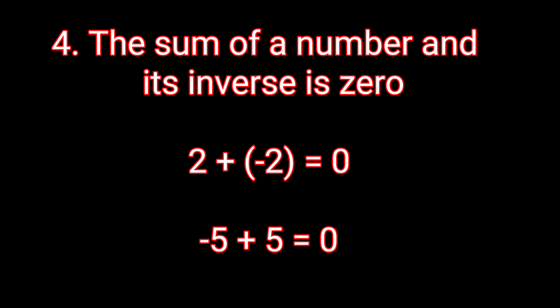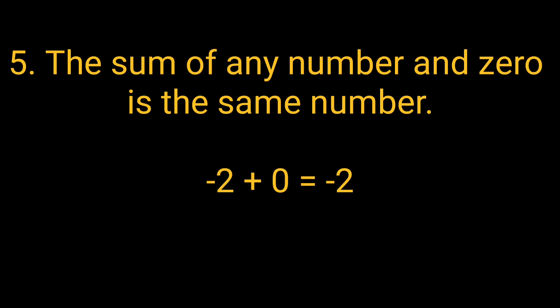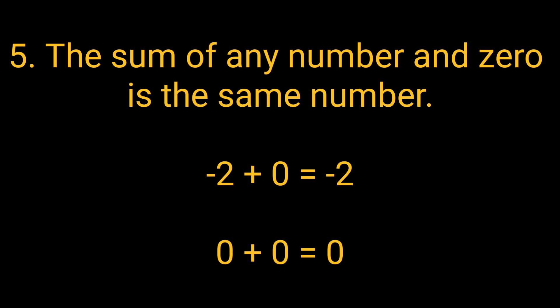The last rule is the sum of any number and 0 is the same number. So this is a very basic rule that when we add any number and 0, we always get back the same number. Minus 2 plus 0 is equal to minus 2. 0 plus 0 is equal to 0.